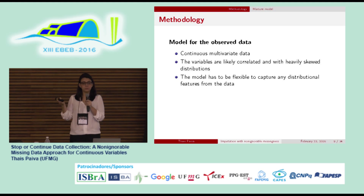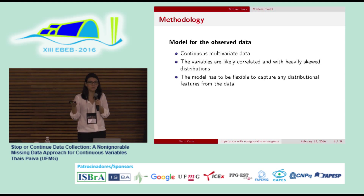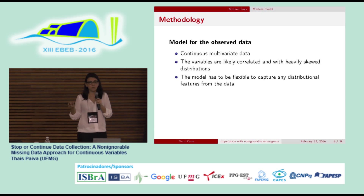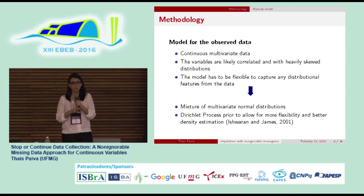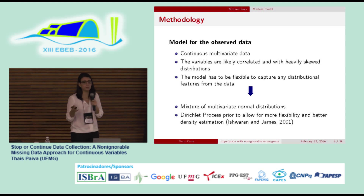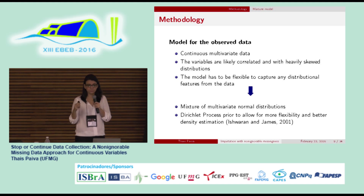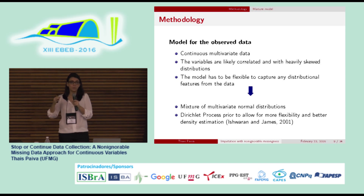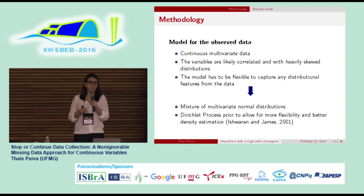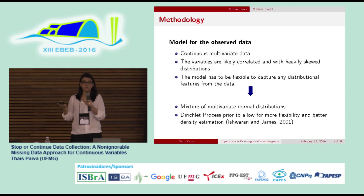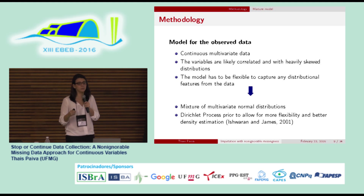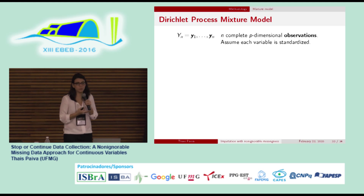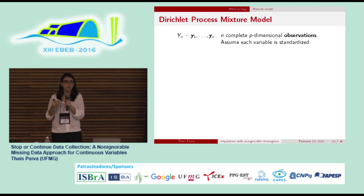For the methodology, we wanted a model for continuous multivariate observed data — variables that are correlated with heavily skewed distributions, because the data is about employment and payroll. We wanted a model flexible enough to capture different distributional features. We chose a mixture of multivariate normal distributions with a Dirichlet process prior to allow flexibility and better estimation, and most importantly a model we could adapt to incorporate our beliefs about the missing not at random hypothesis.